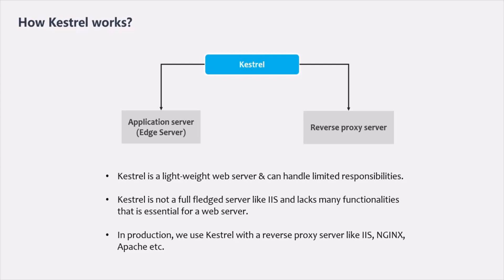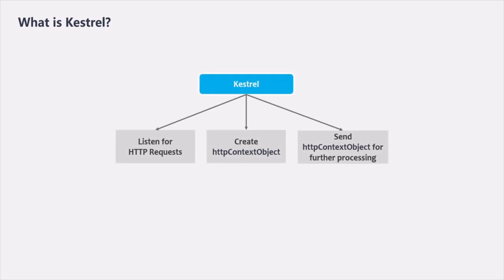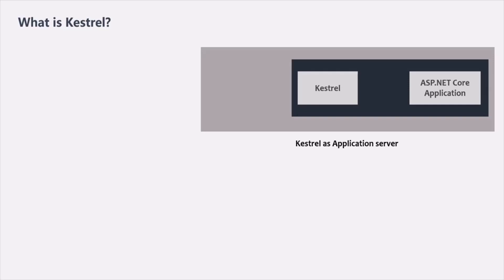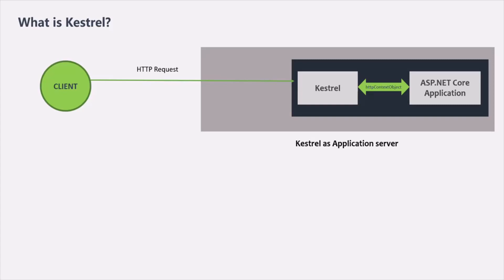The main responsibility of Kestrel is to listen for HTTP requests, compose an HTTP context object from that request, and send that HTTP context object for further processing to the ASP.NET Core application. For example, when a browser sends an HTTP request to an ASP.NET Core application, Kestrel receives it, creates an HTTP context object, and passes it to the application. On the response side, Kestrel creates an HTTP response from the context object and sends it back to the client. This is using Kestrel as an edge server.